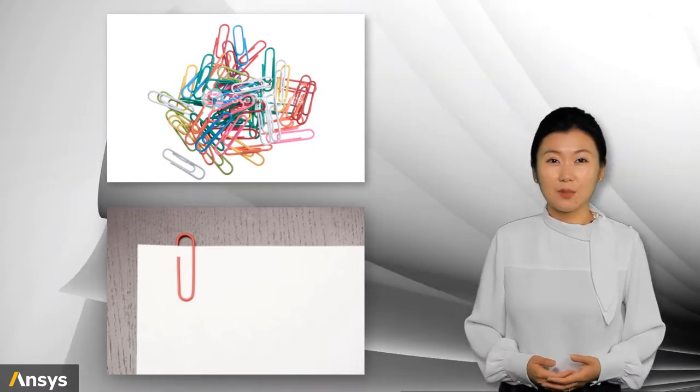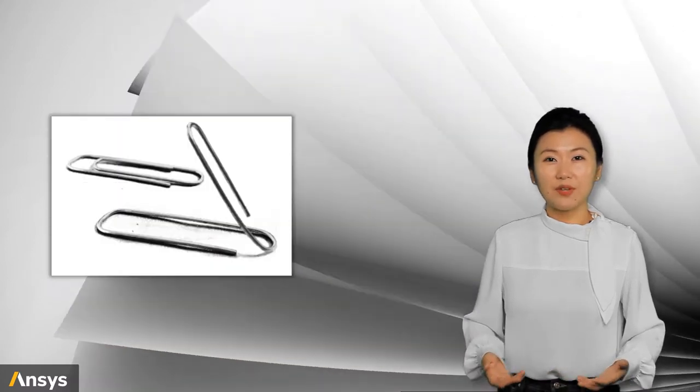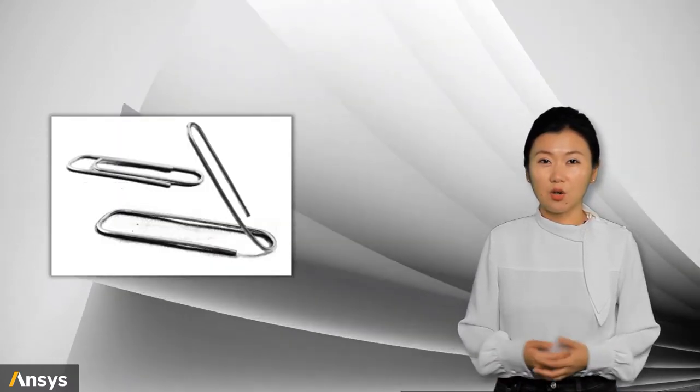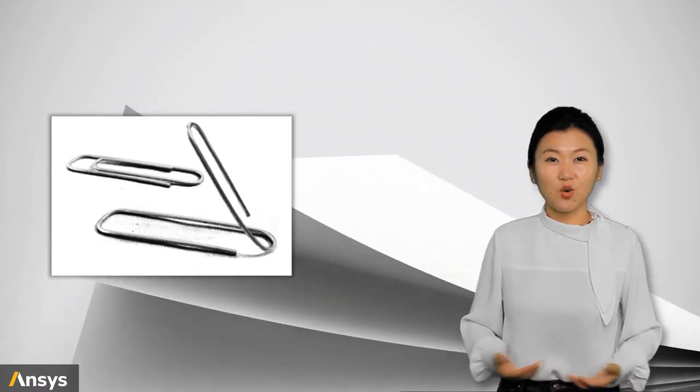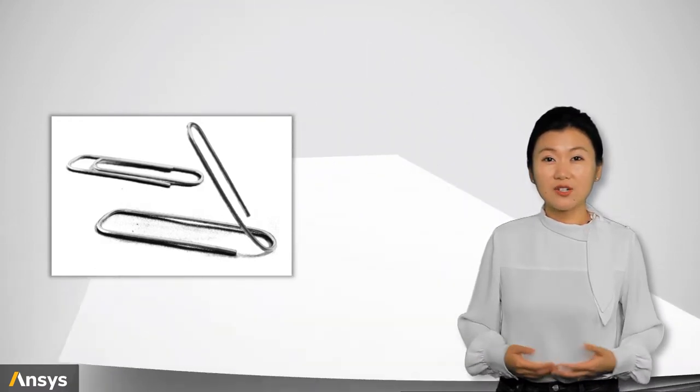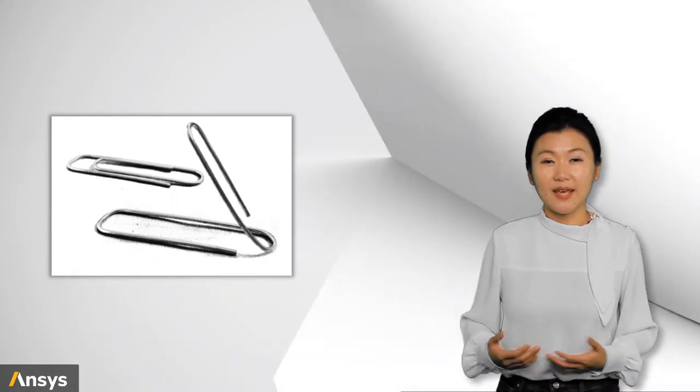However, the elastic behavior in steel wires is limited. What will happen if we bend or pull hard on a paper clip? Will it be able to restore the original shape? Of course not. The steel wires easily reach the plasticity and the paper clip will then stay at the deformed shape.